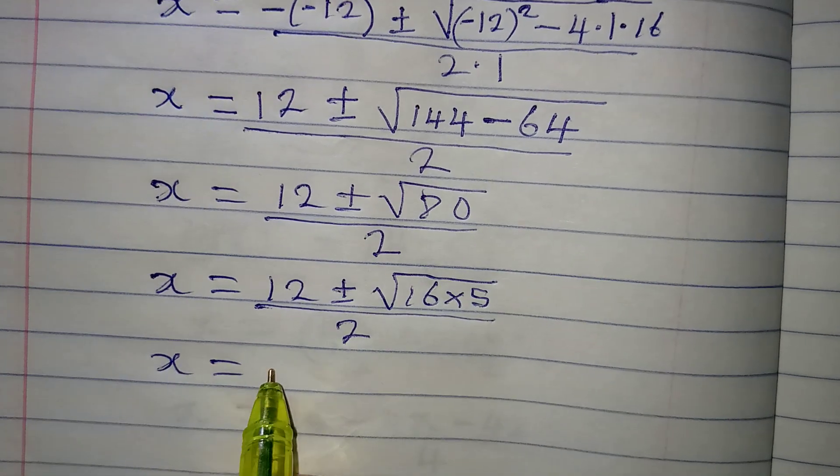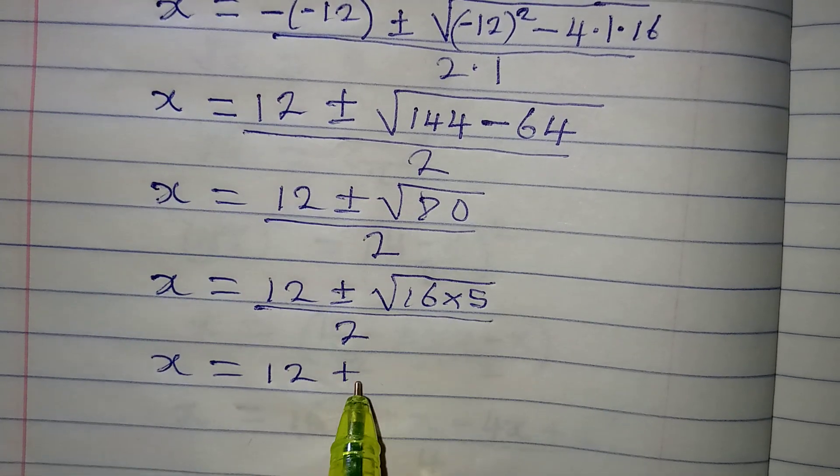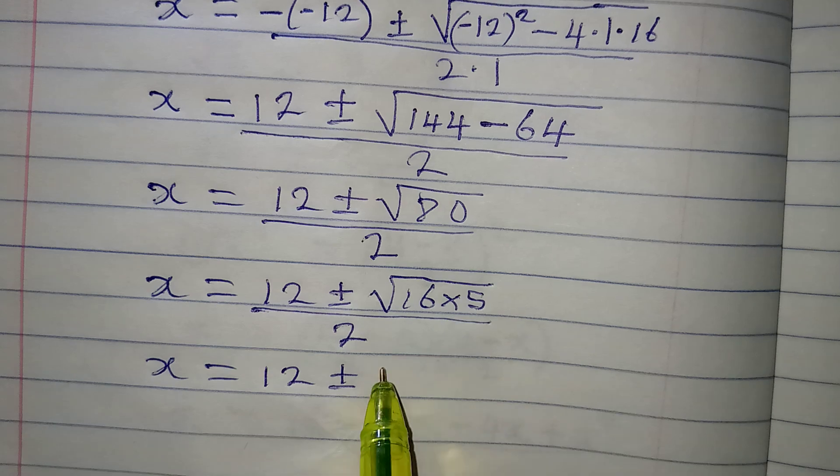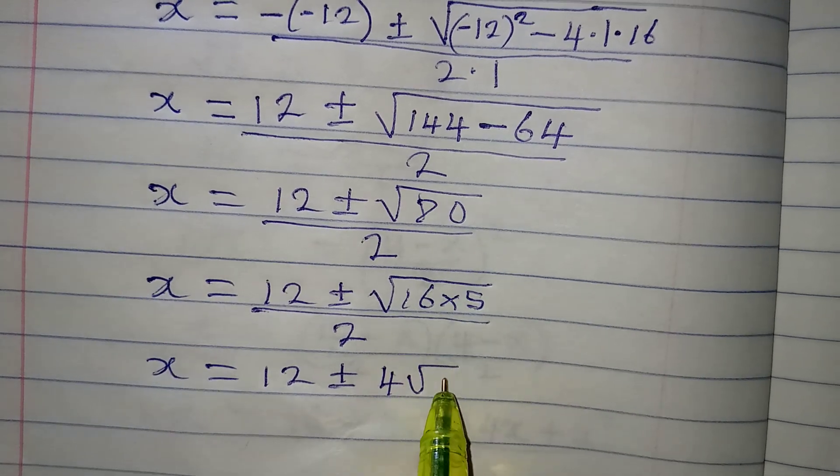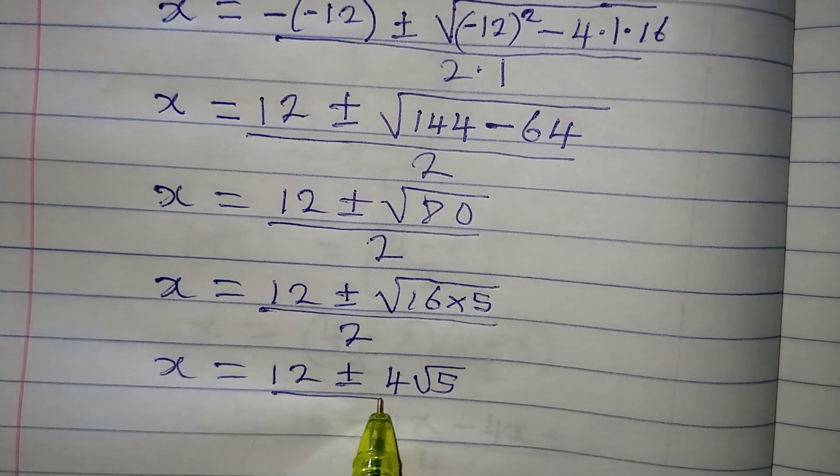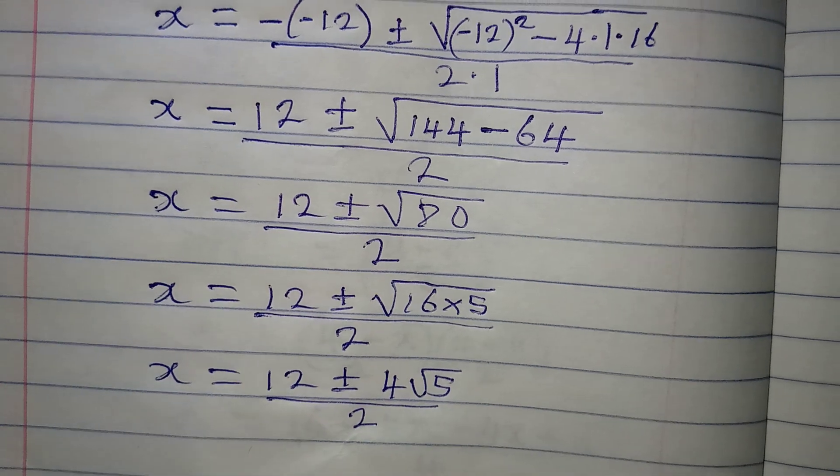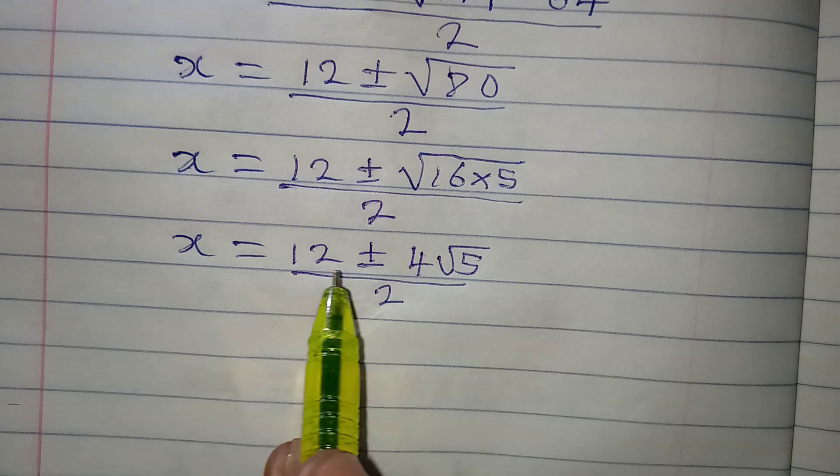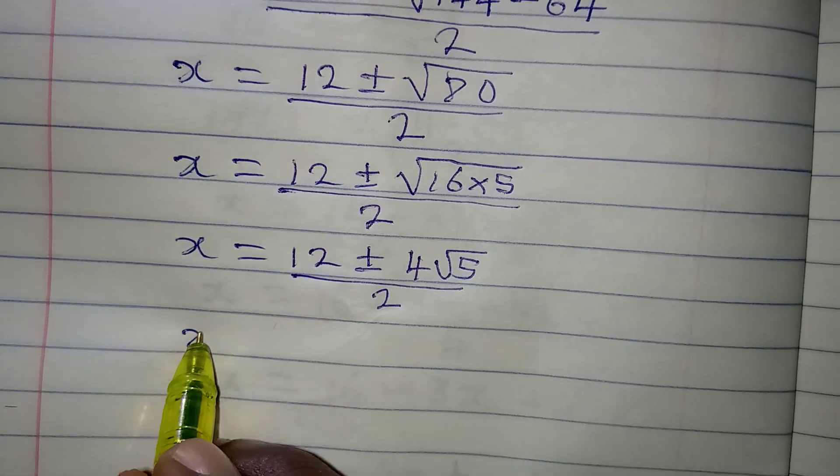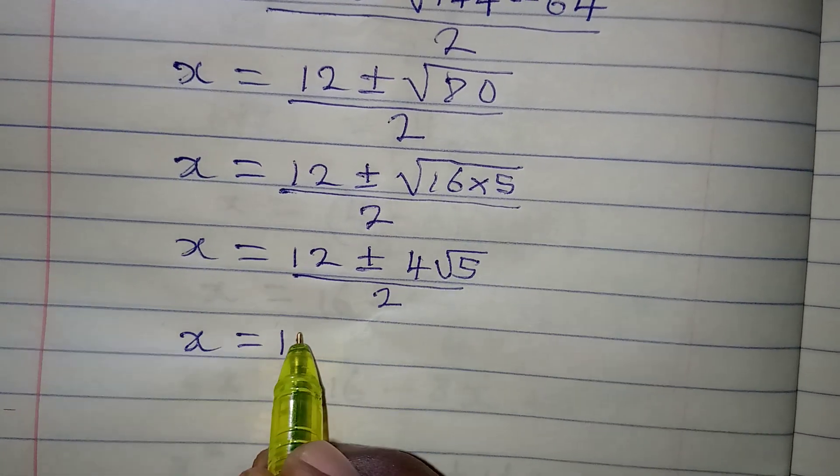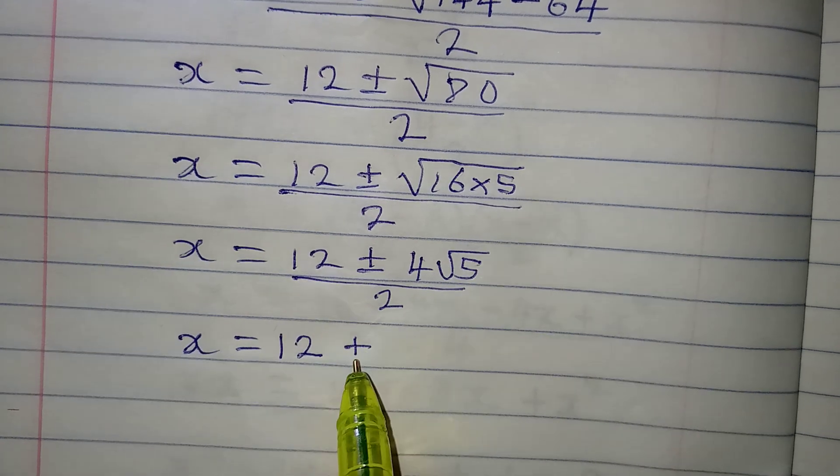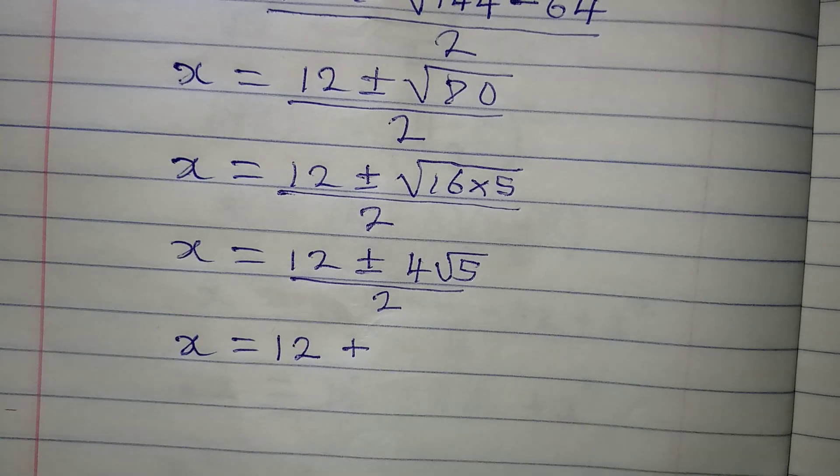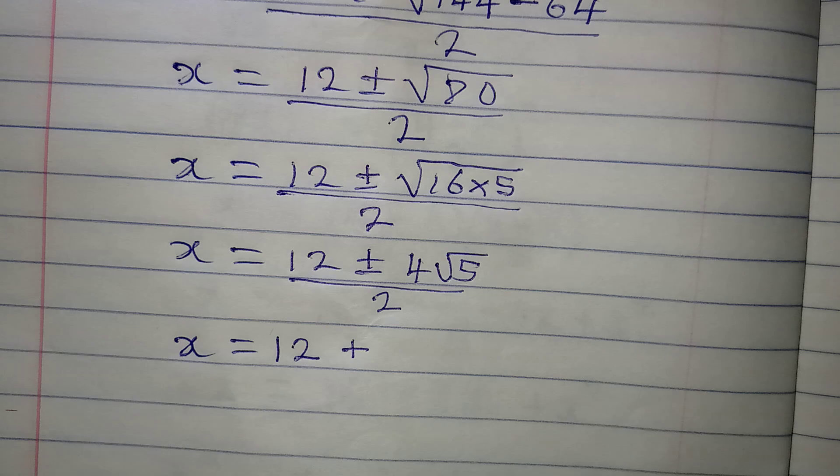Now, x will be equal to 12 plus or minus. Square root of 16 is 4, then we have root 5. The whole of this is over 2. Now, because we have 2 as a denominator, I want us to factor 2 out. So x will now be equal to 12. I'm factoring 2 out, so we're factorizing to bring out 2.